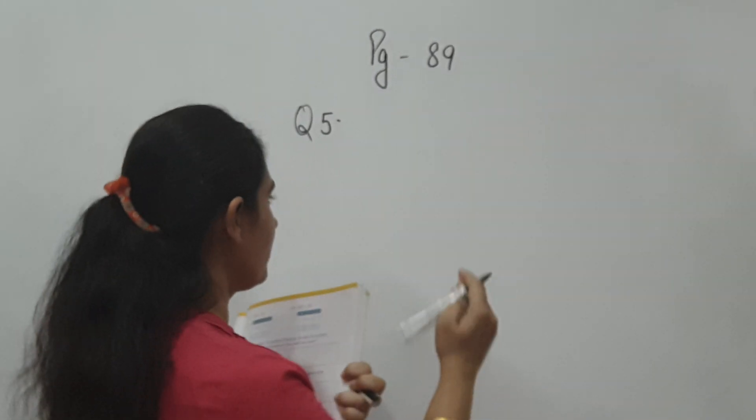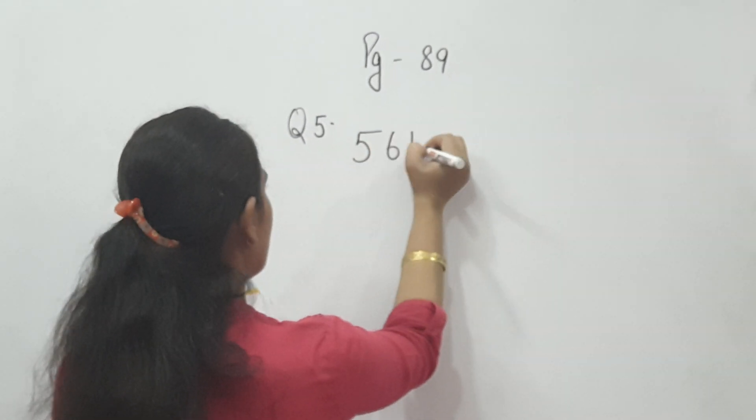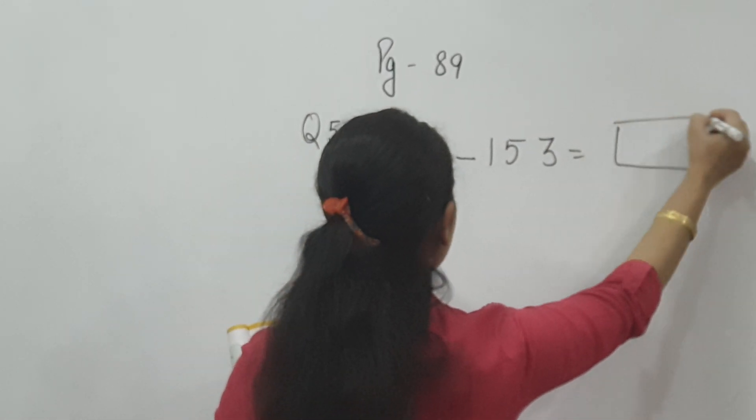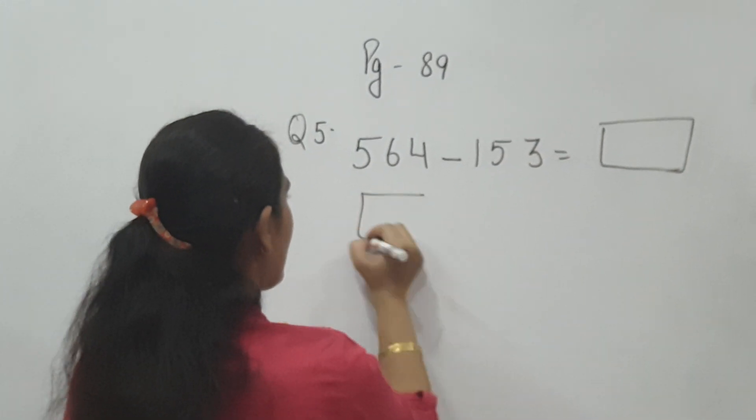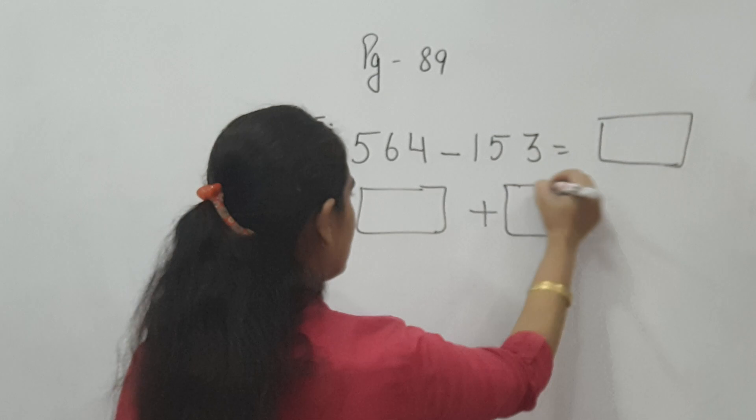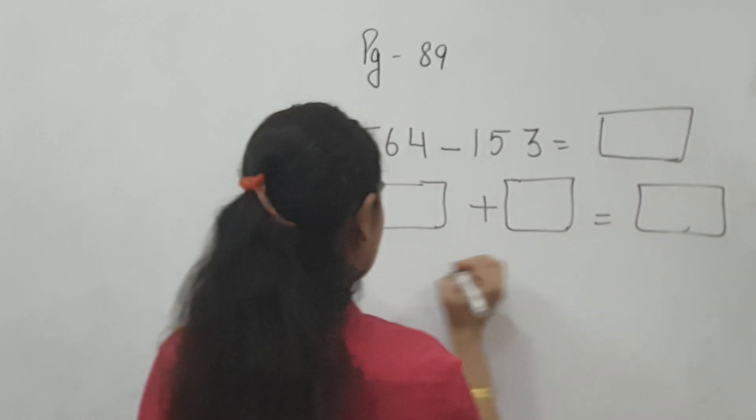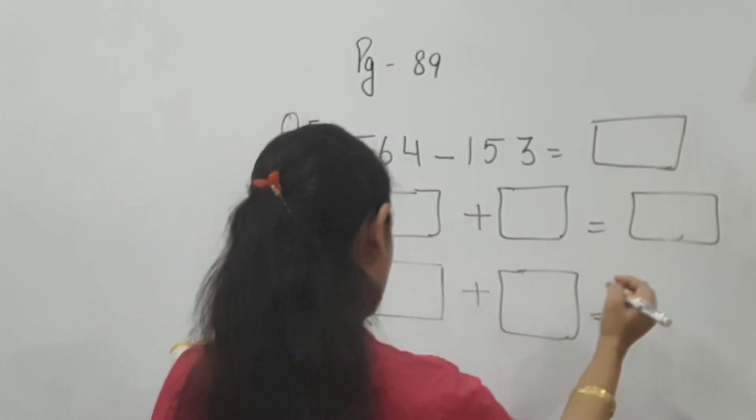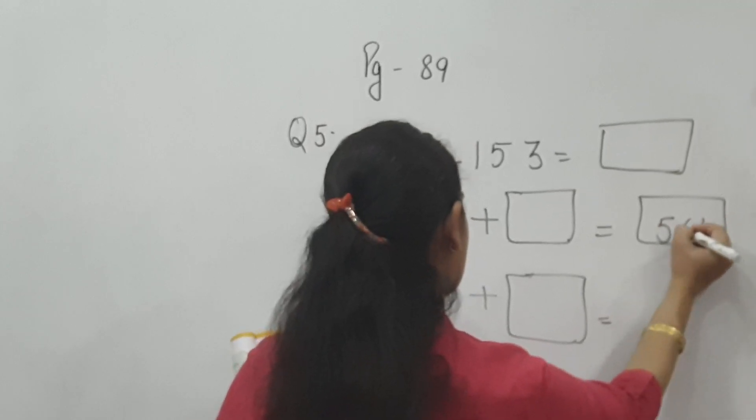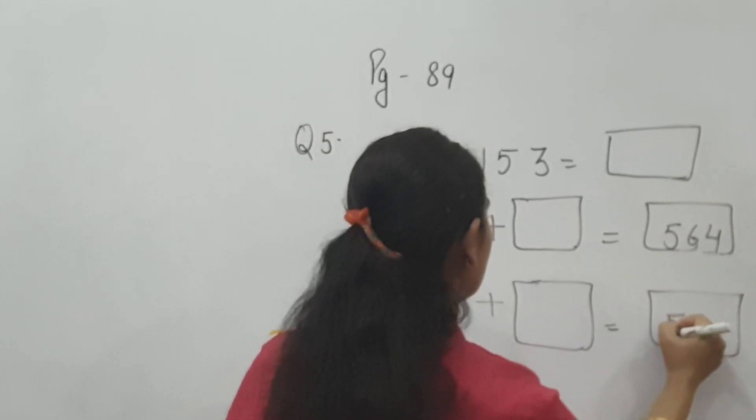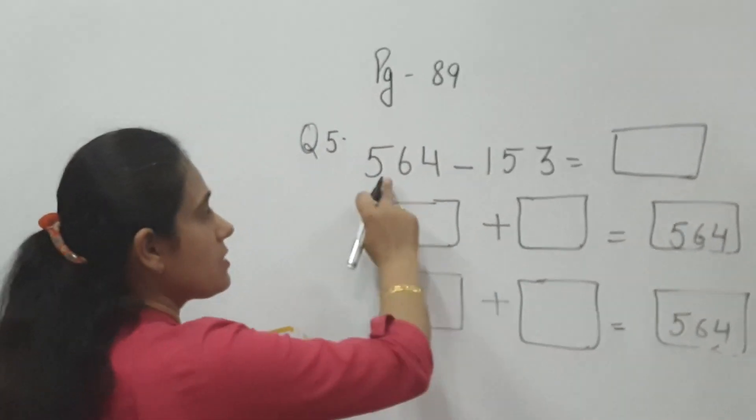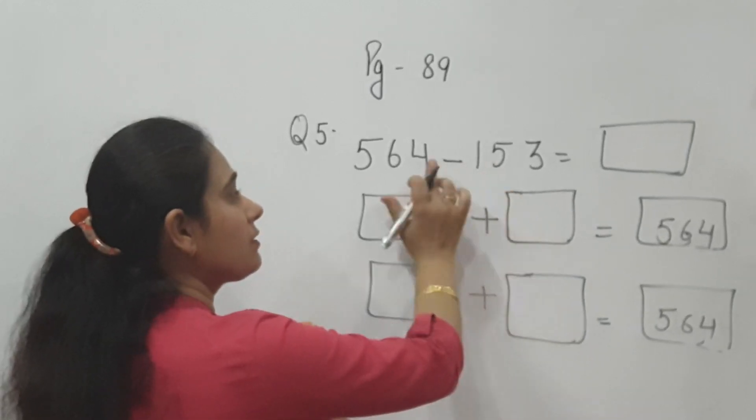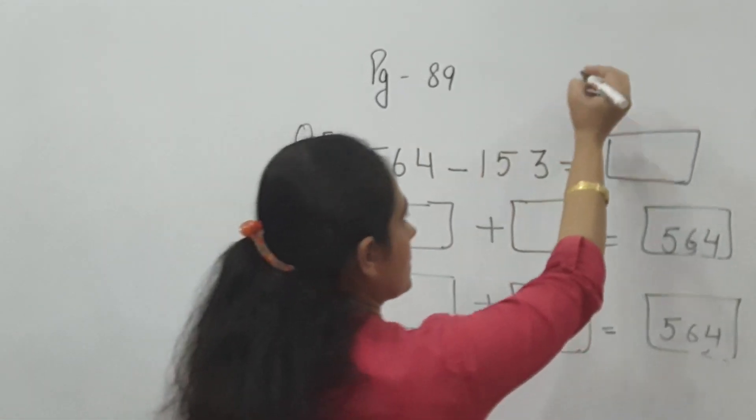The question is given 564 minus 153. This is given. How to do this type of sum? Firstly, 564 minus 153. You will subtract 153 from 564.